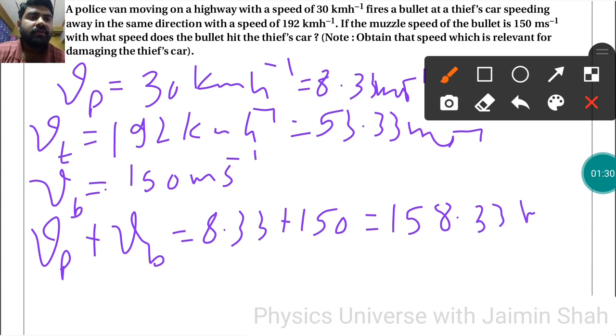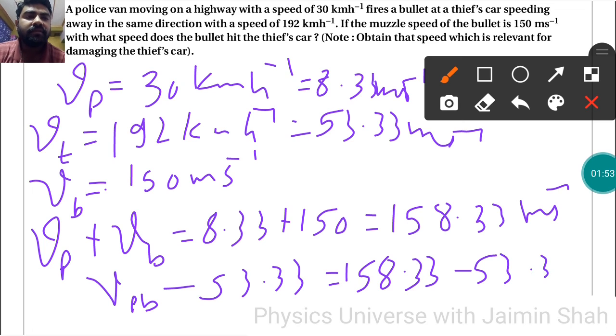That is meters per second. Now here the thief's car is also in the same direction, so relative velocity will be there. So VPB minus thief car is 53.33.